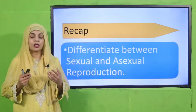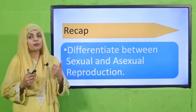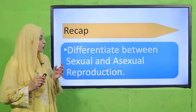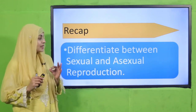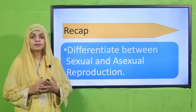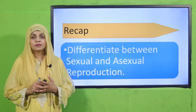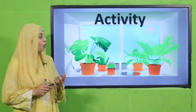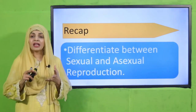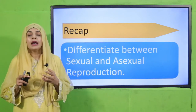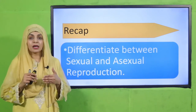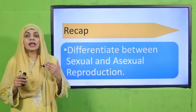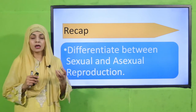Let's start today's lecture with a recap of the previous lecture. Differentiate between sexual and asexual reproduction. In asexual reproduction, there are no male and female parts required. Only vegetative parts are included. In sexual reproduction, male and female parts are needed.